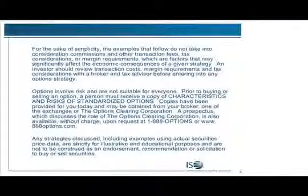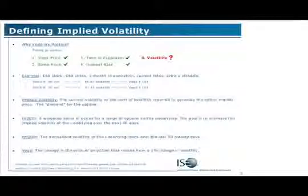All of you know that when you're trading options, the option disclosure document is really, really important. You can get the characteristics and risks of standardized options through your broker, or you can call 1-888-OPTIONS or go to optionseducation.org. Anything that we talk about today is not an endorsement for any sort of trade recommendation — we're just using examples. And taxes, margin, and commission are not included, but they're very, very important. So, Stefan, why don't you take it away and define implied volatility, historic volatility, and enlighten us on what volatility really means.